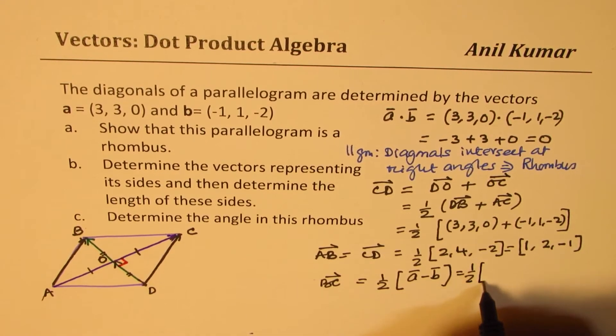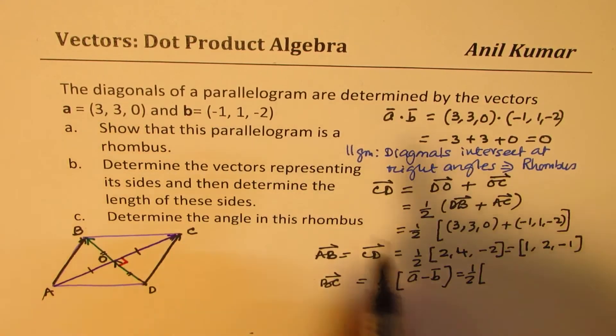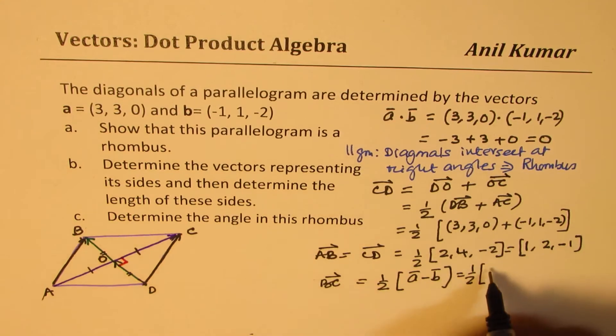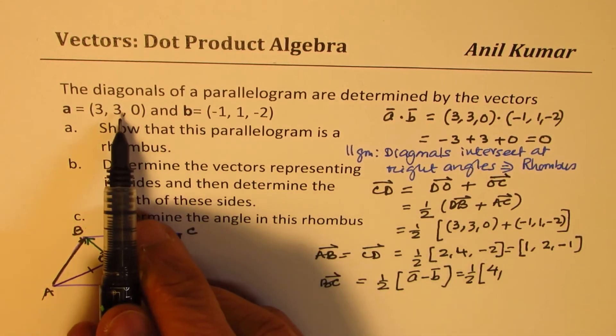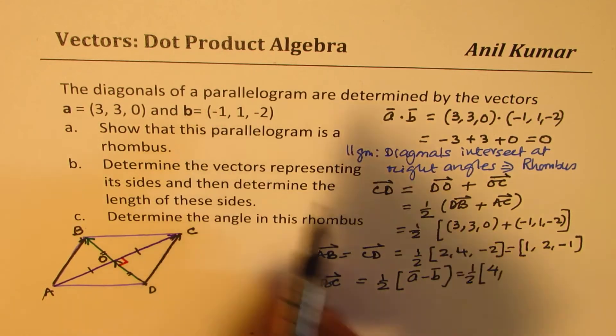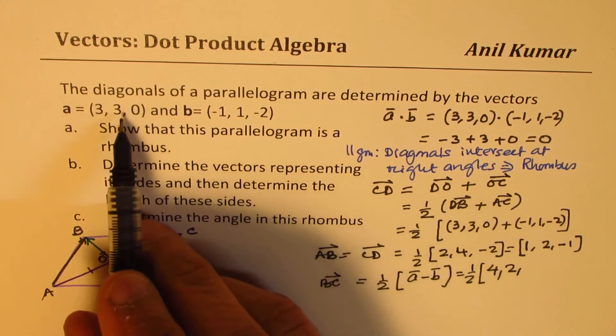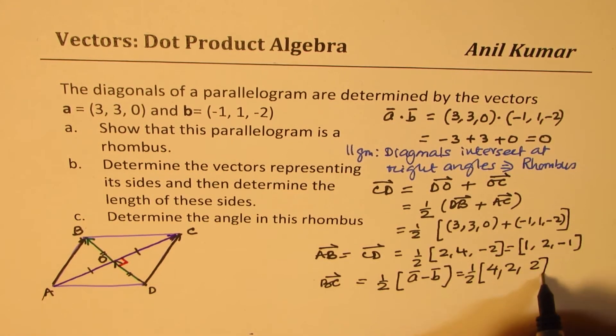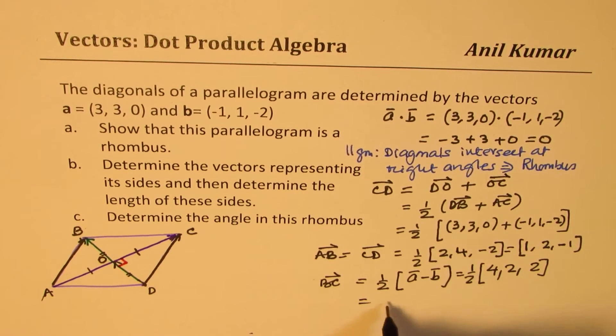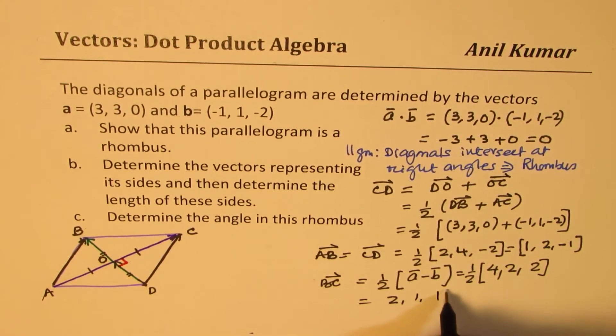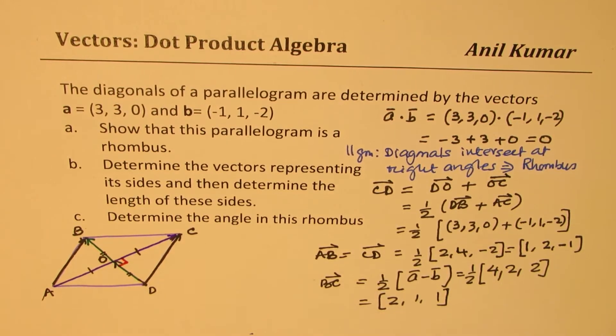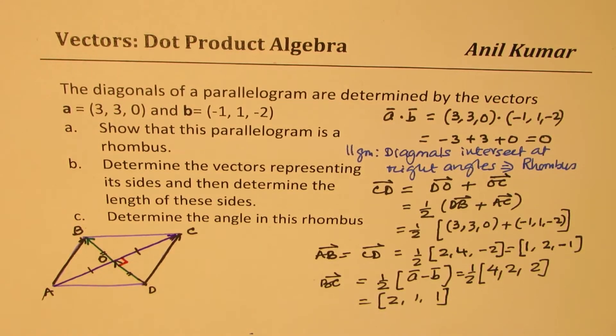Which is half of, so if you do A minus B, you get 3 minus 1 is 4. Let's do direct. 3 minus 1 is 2. That was minus 1, so it became 4. This is 2. 0 minus 2 is 2. And so this half is 2, 1, 1. So vector B, C is 2, 1, 1. So we get these two vectors.